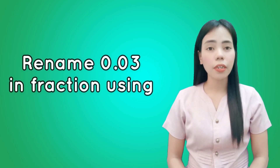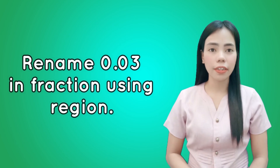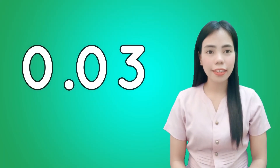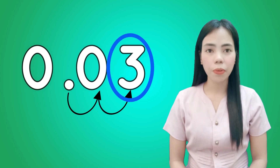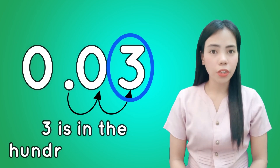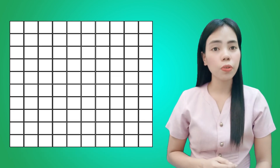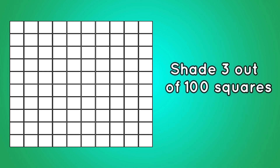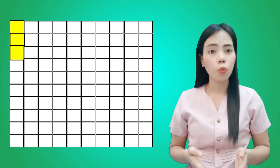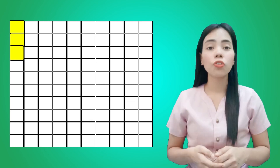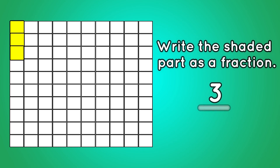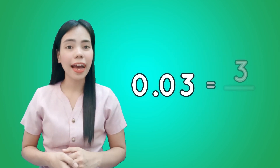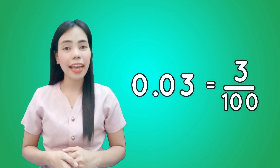How about renaming 0.03 or 3 hundredths as a fraction using regions? First, look at the decimal point — the last digit is 2 places away from the decimal point to the right, so 3 in 0.03 is in the hundredths place. Therefore, we will use a 10 by 10 grid, a region with 100 squares. Shade 3 out of 100 squares. Using the region, we can write the shaded part as a fraction: 3 out of 100 parts is written as 3 over 100, read as 3 hundredths. Therefore, 3 hundredths in decimal form is equal to 3 hundredths in fraction form.